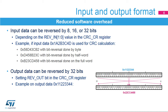For example, input data 0x1A2B3C4D is used for CRC calculation as 0x58D43C2 with bit reversal done by byte, 0xD458B23C with bit reversal done by half-word, and 0xB23CD458 with bit reversal done on the full word.